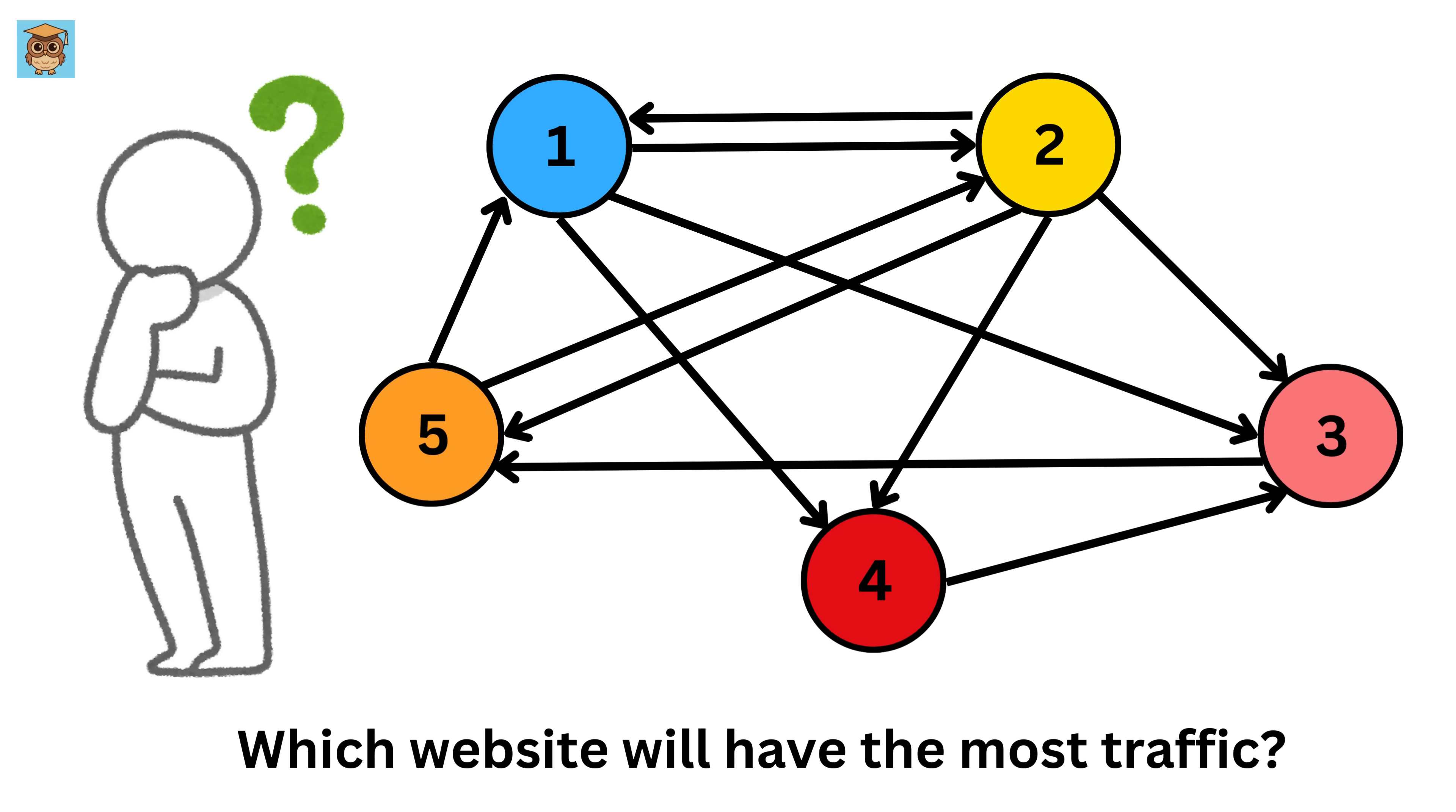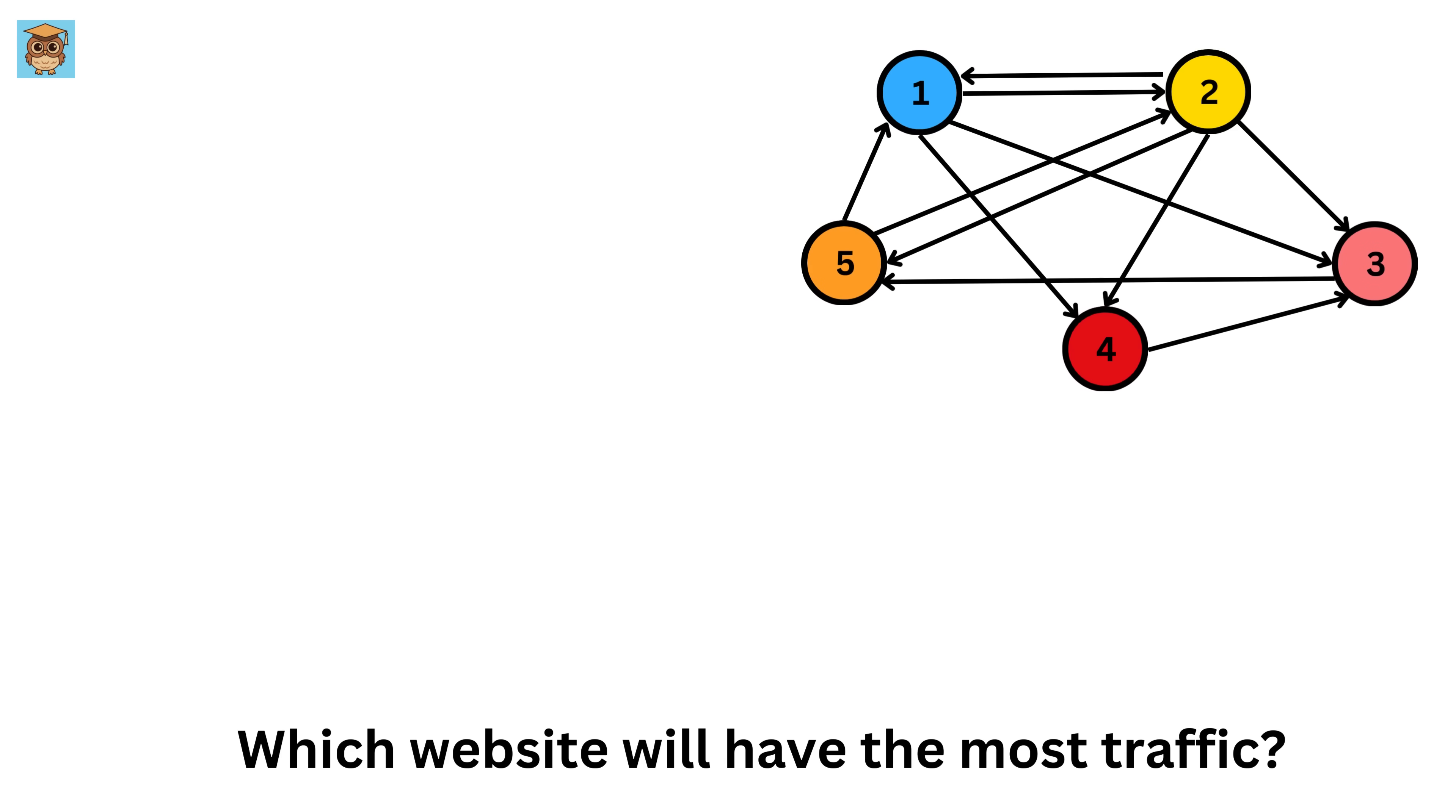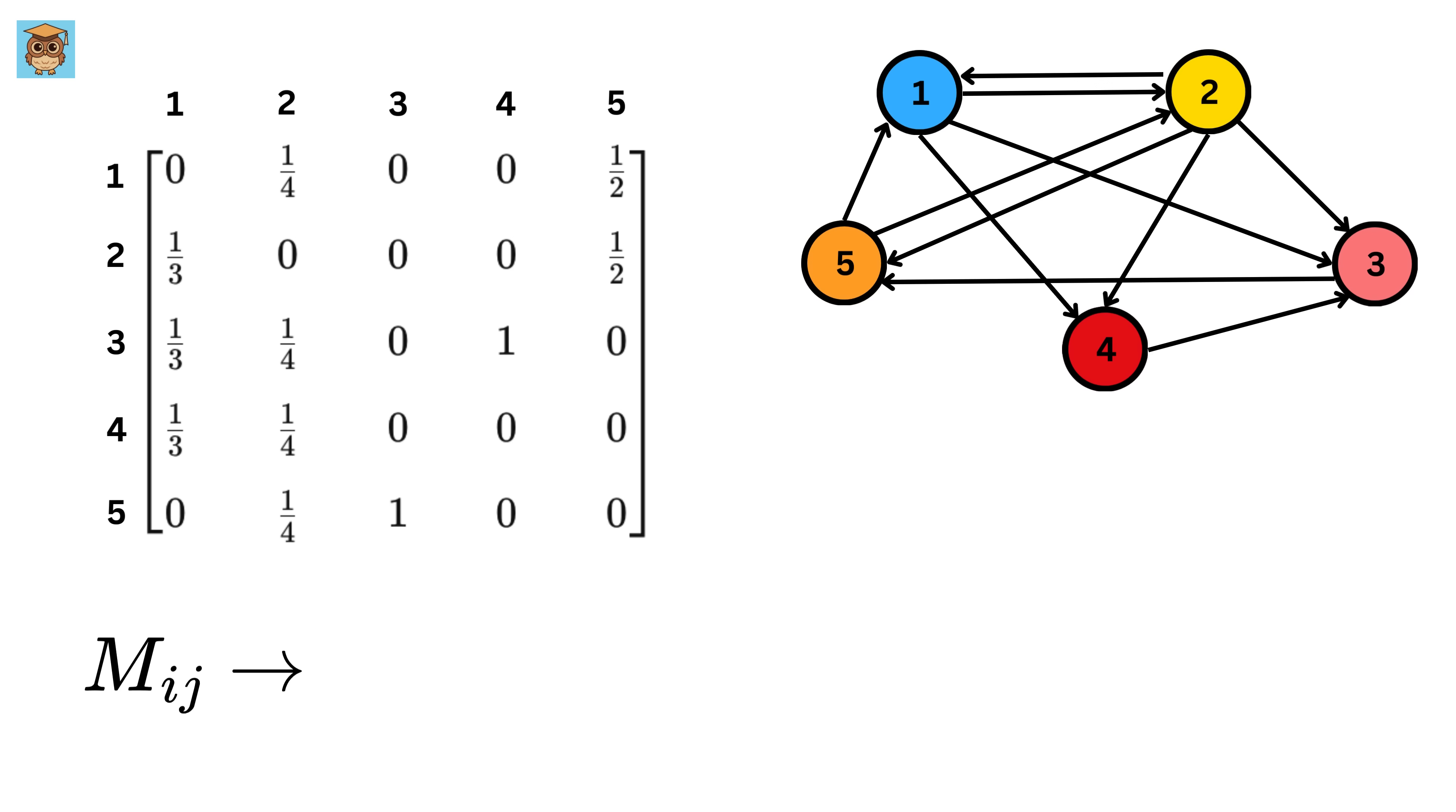You might be thinking how eigenvalues and eigenvectors might be playing any role here. You know that for eigenvectors we need a matrix, and this is how we will construct this matrix. Here we have five websites, which means we will be having a matrix of size 5 cross 5 which has 5 rows and 5 columns. The value at position i and j in the matrix represents the probability of a user navigating from website i to website j. This matrix is called the Google matrix or link matrix, and it captures how web traffic flows through links between websites.